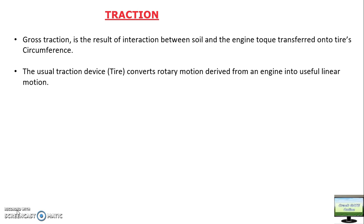Traction is the result of conversion of rotary motion coming from the engine into linear motion. It will help your tractor to move in the forward direction. This gross traction is the result of interaction between soil and engine torque acting on the tyre circumference, and it will help your tractor to move in the forward direction.